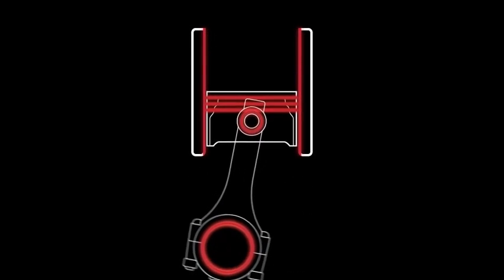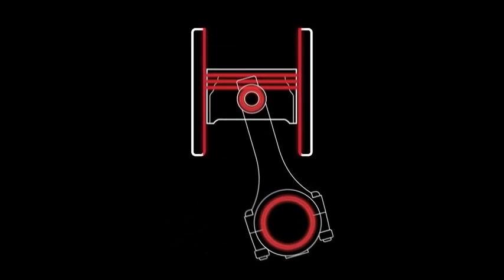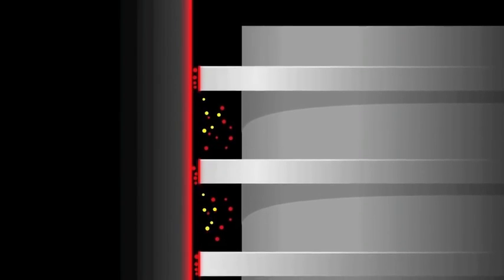Friction is causing microscopic shards of metal to wear off. These small particles get trapped between moving parts, wearing them down and creating more particles.